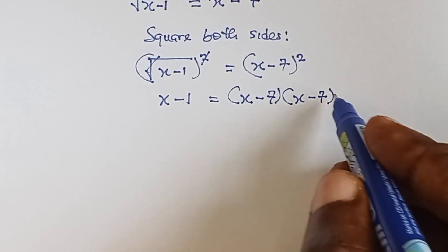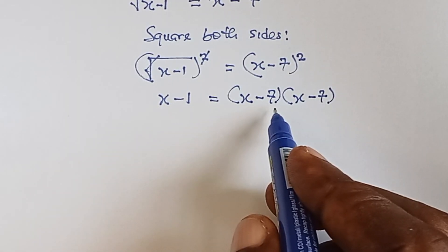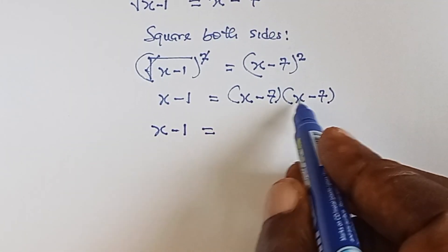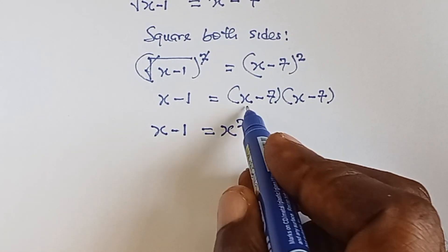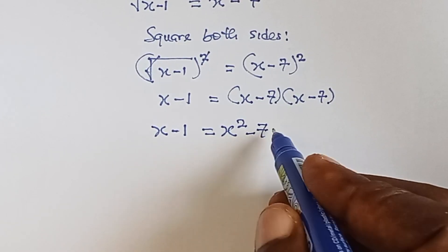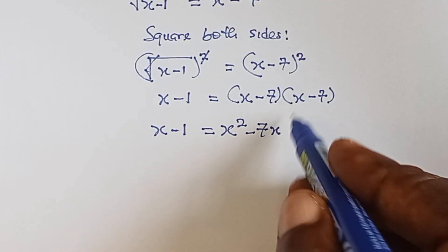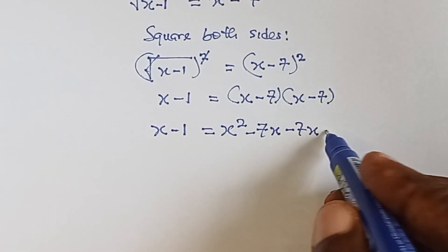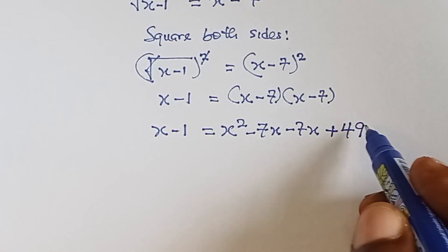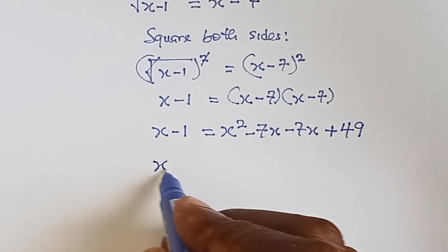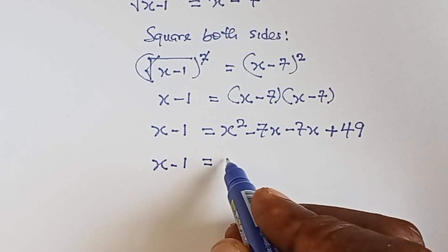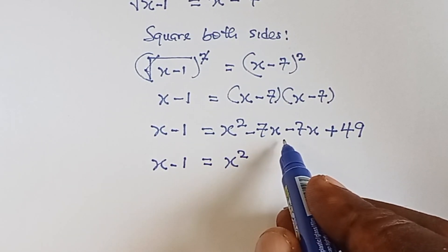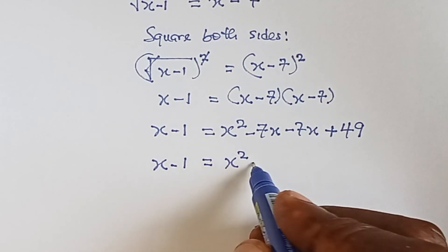We expand x minus seven squared: x times x gives x squared, x times minus seven gives minus seven x, minus seven times x gives minus seven x, and minus seven times minus seven gives plus 49. So we have x minus one equals x squared minus 14x plus 49.